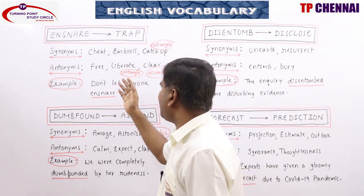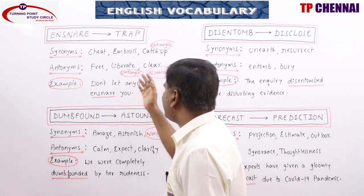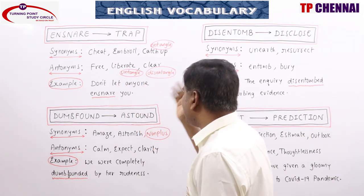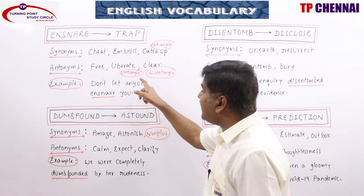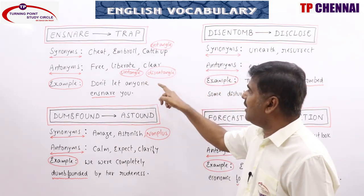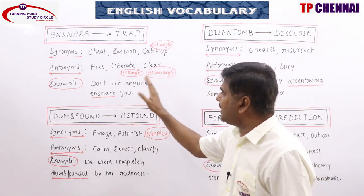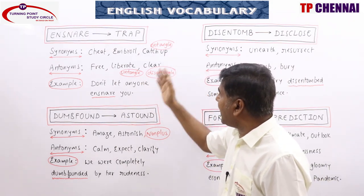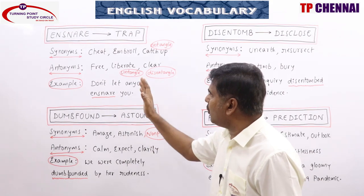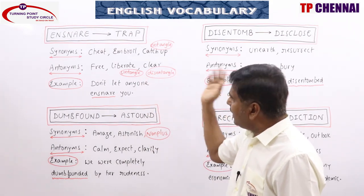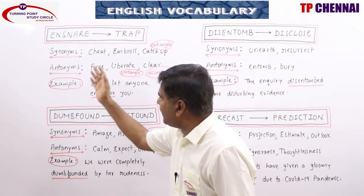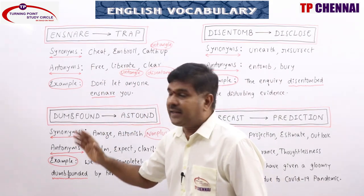Antonyms of ensnare: free, liberate, clear, extricate, untangle, disentangle. Note that untangle and disentangle have similar meanings. All these words are antonyms.